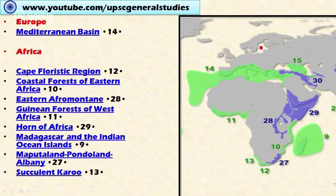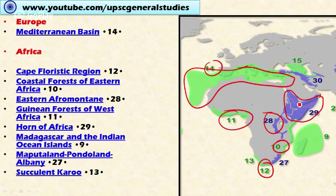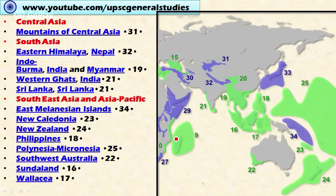In Europe, the entire Mediterranean Basin is considered a biodiversity hotspot. In Africa, we have the Cape Floristic Region in South Africa, the Coastal Forests of Eastern Africa, the Eastern Afromontane region, the Guinean Forests of West Africa, the Horn of Africa — which includes Somalia, Djibouti, and Eritrea — and Madagascar and the Indian Ocean Islands. Maputaland-Pondoland-Albany and the Succulent Karoo are also biodiversity hotspots.